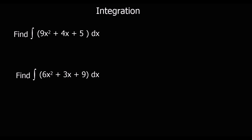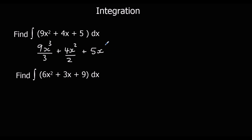Let's have a look at doing some questions. We're going to follow the process: add 1 to the power, divide by the new power, and plus c on the end. So find the integral of this with respect to x. We add 1 to the power — the first power goes to 3, so we divide by 3. For the next term, add 1 to the power so it'll go to 2, divide by 2. Add 1 to the power for 5x — we don't need to divide by 1 because 5 divided by 1 is just 5. And plus c on the end.